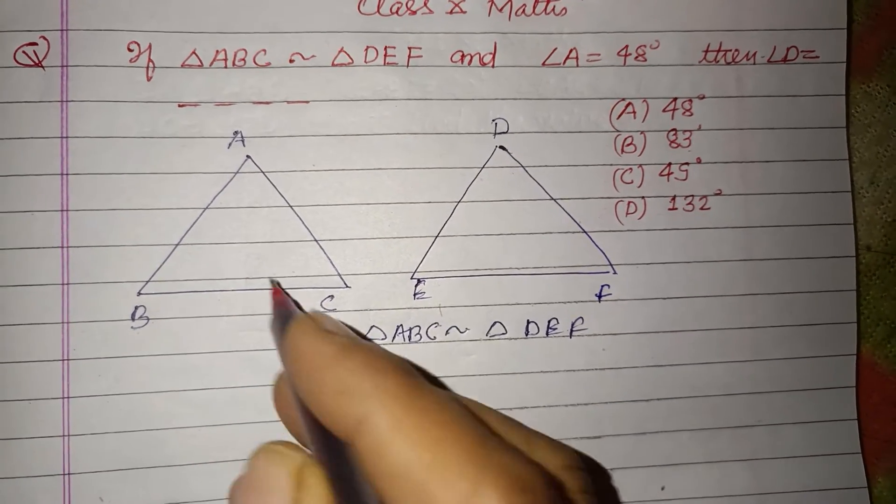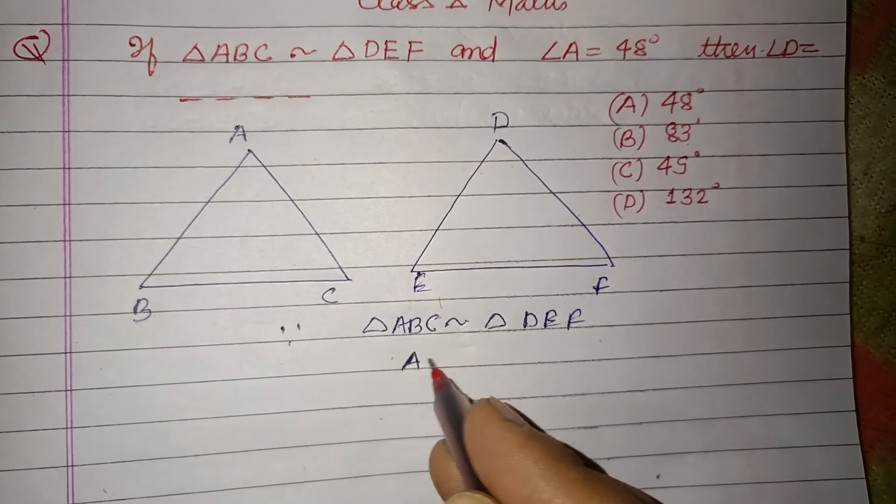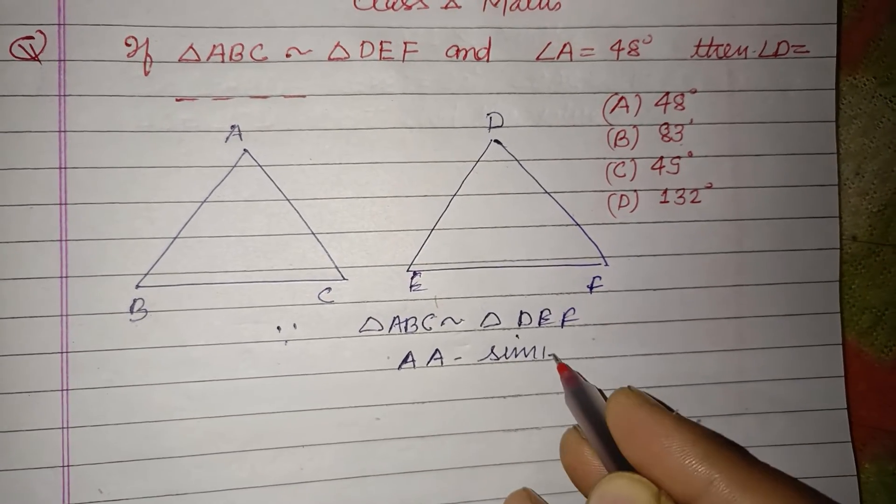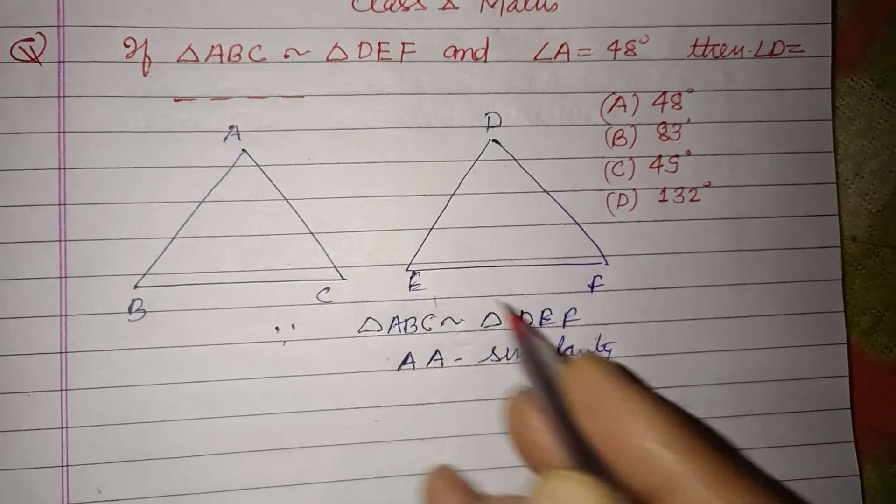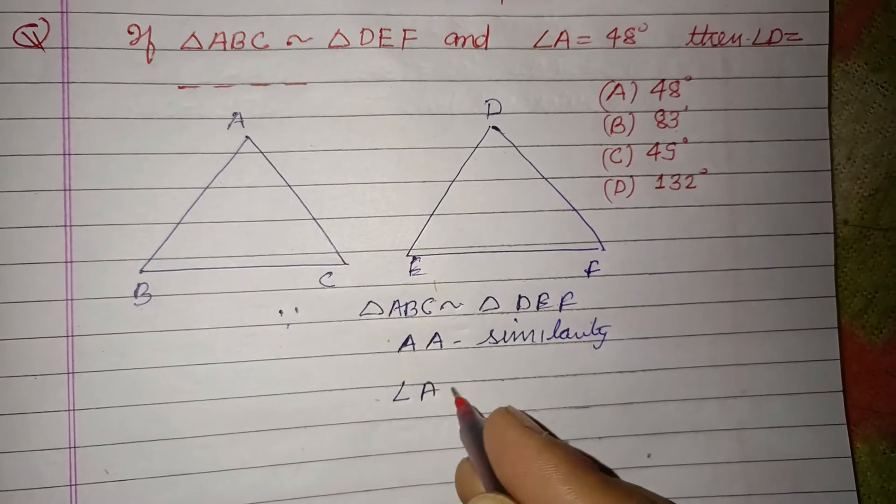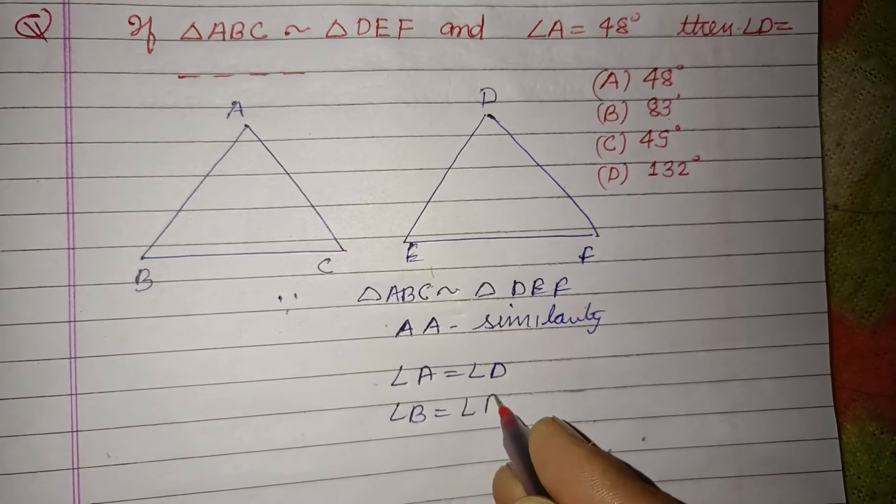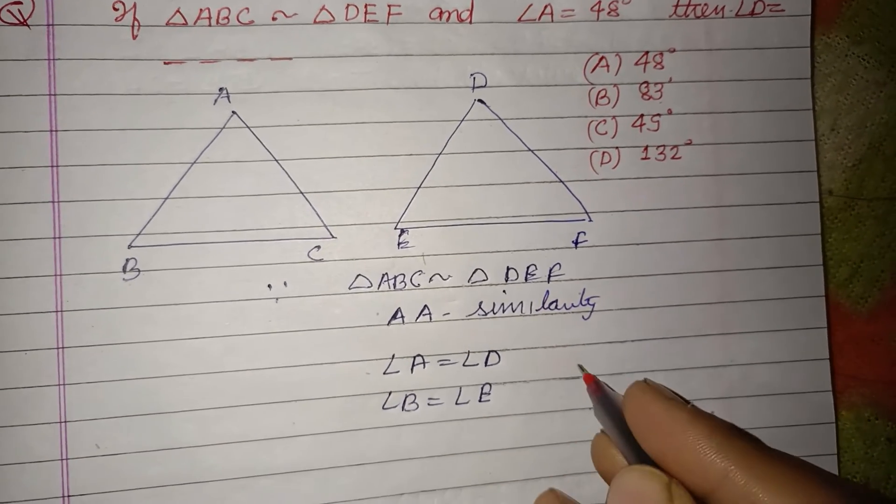because of AA similarity, angle A equals angle D, angle B equals angle E, and angle C equals angle F.